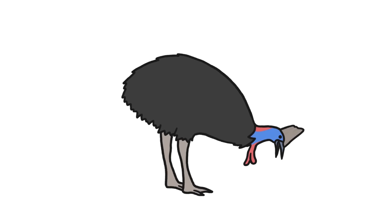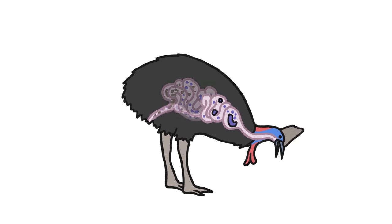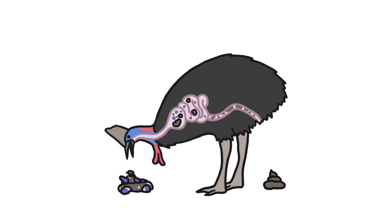And when the southern cassowary eats cassowary plums, the fruits are so big and the birds' digestive tracts so short that the cassowary poops out whole chunks of the fruit. It then turns around and picks them out to eat and digest again.